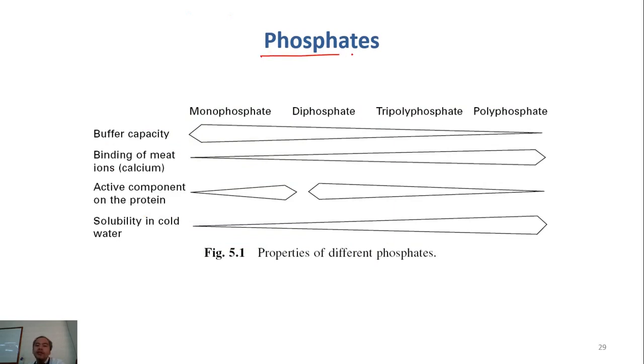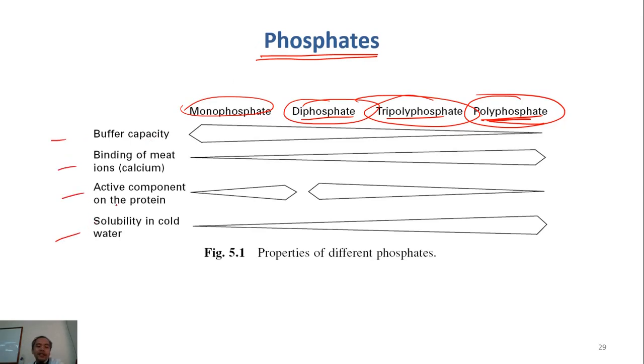Phosphate is a general common word. But actually, there are many types of phosphates. You have monophosphate, you have diphosphate, triphosphate, polyphosphate, different polyphosphates. And different phosphates have different capacity on property. For example, on buffering capacity, the monophosphate has a stronger buffering capacity. Poly has smaller buffering capacity.